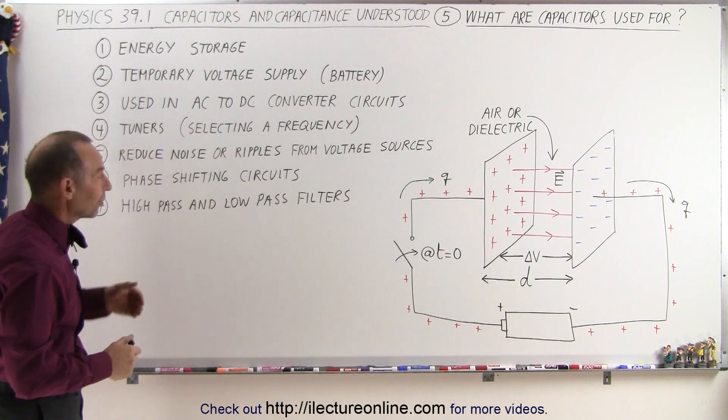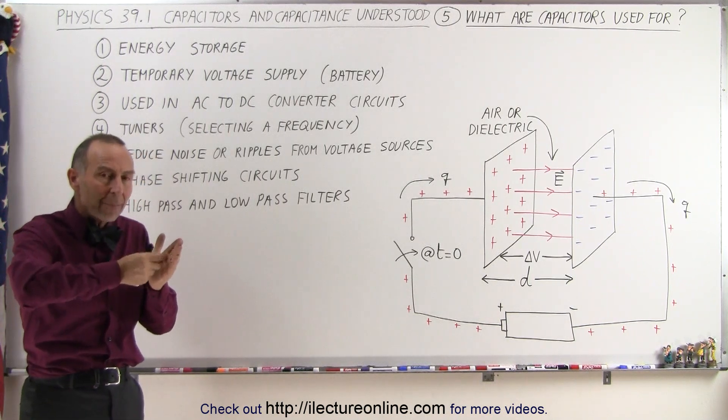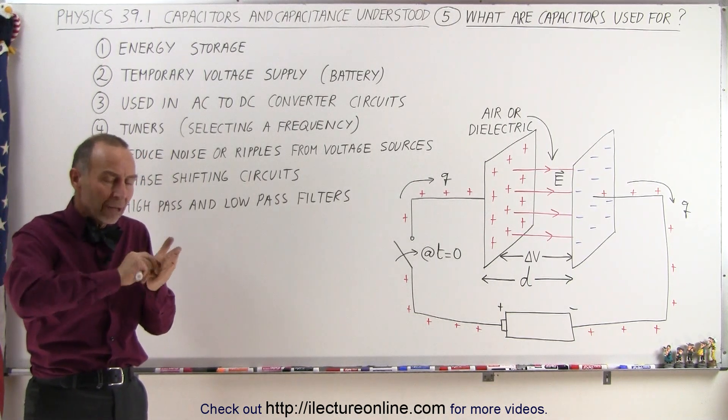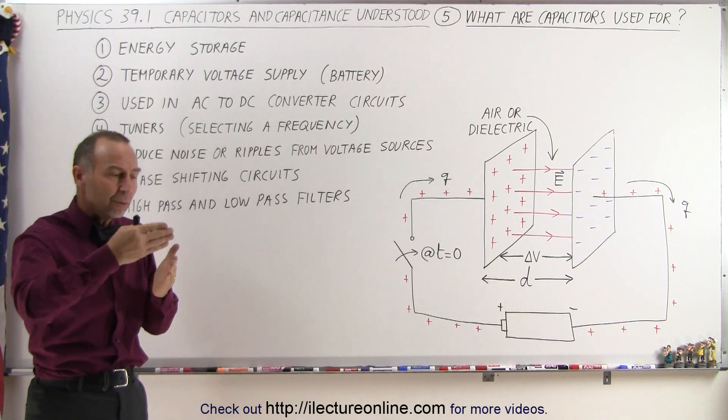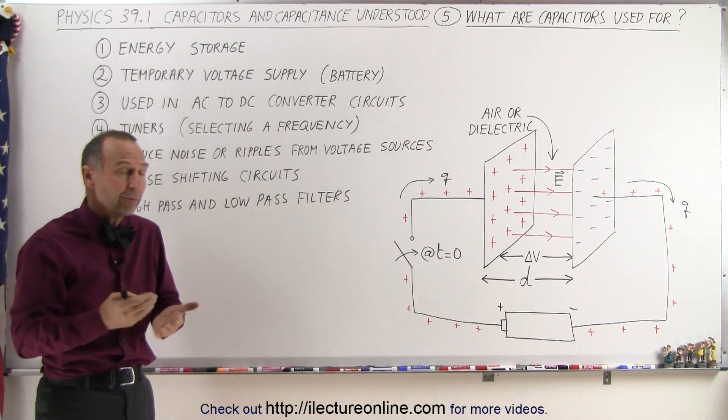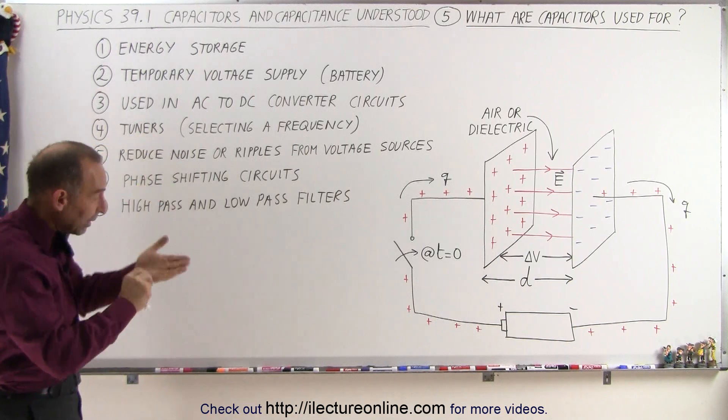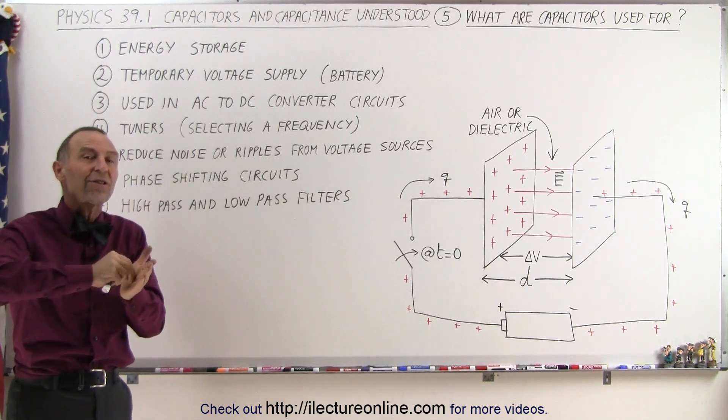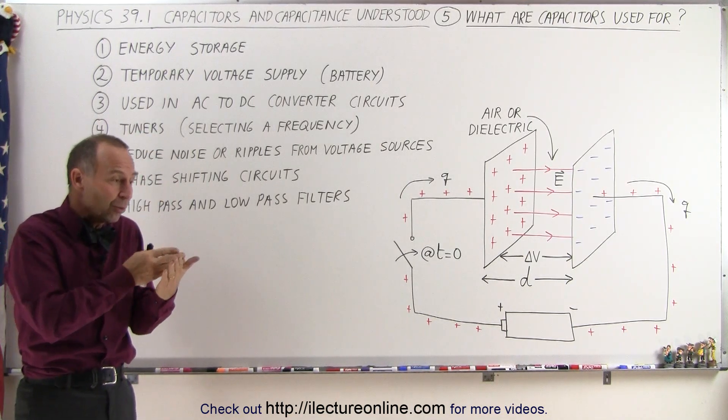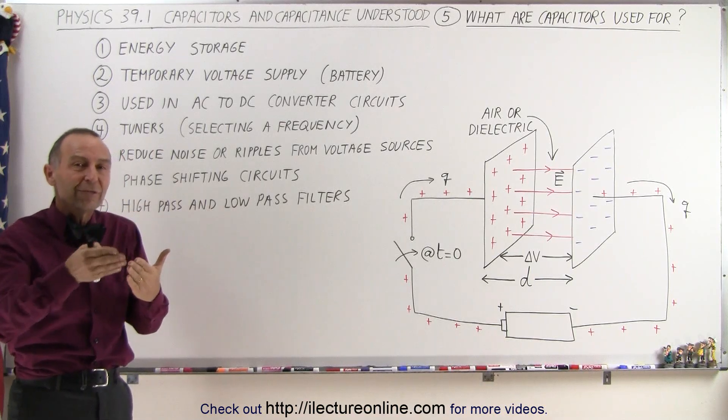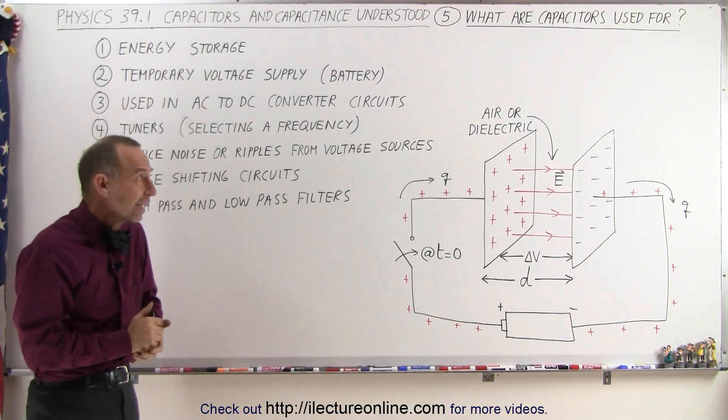We can also use them for tuners, like the old radios where you had a little knob where you turn the knob back and forth to tune yourself to a different radio channel, a different broadcasting station. That's in essence what you're doing: you're changing the capacitance of a capacitor, which then enables you to tune to a different frequency or broadcasting frequency.